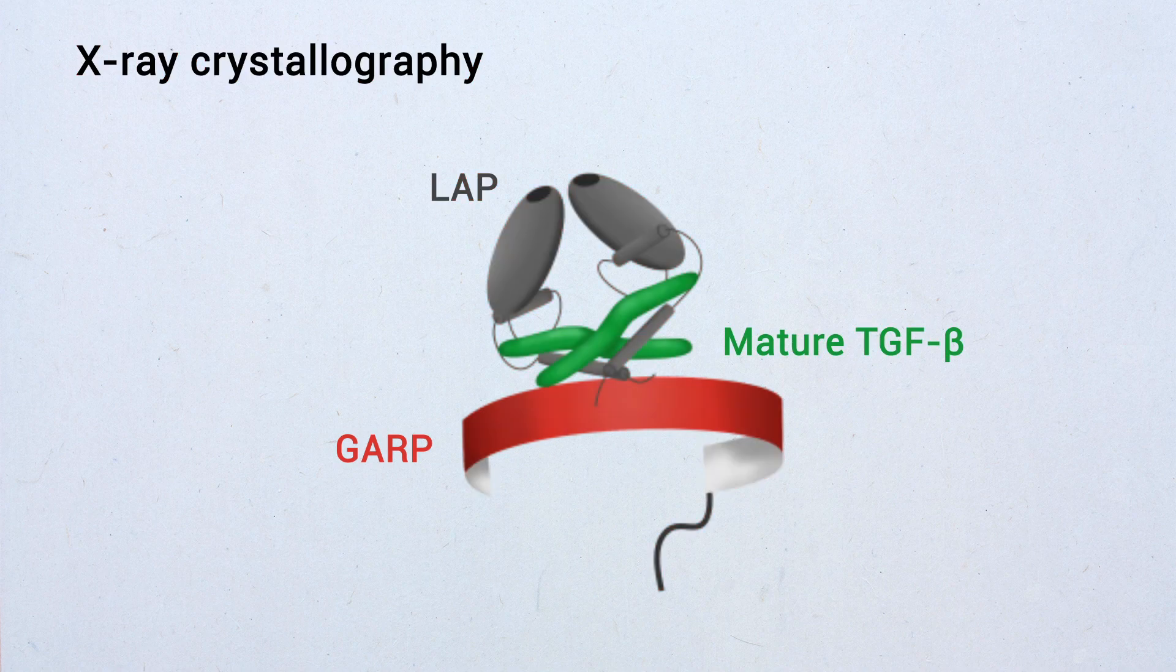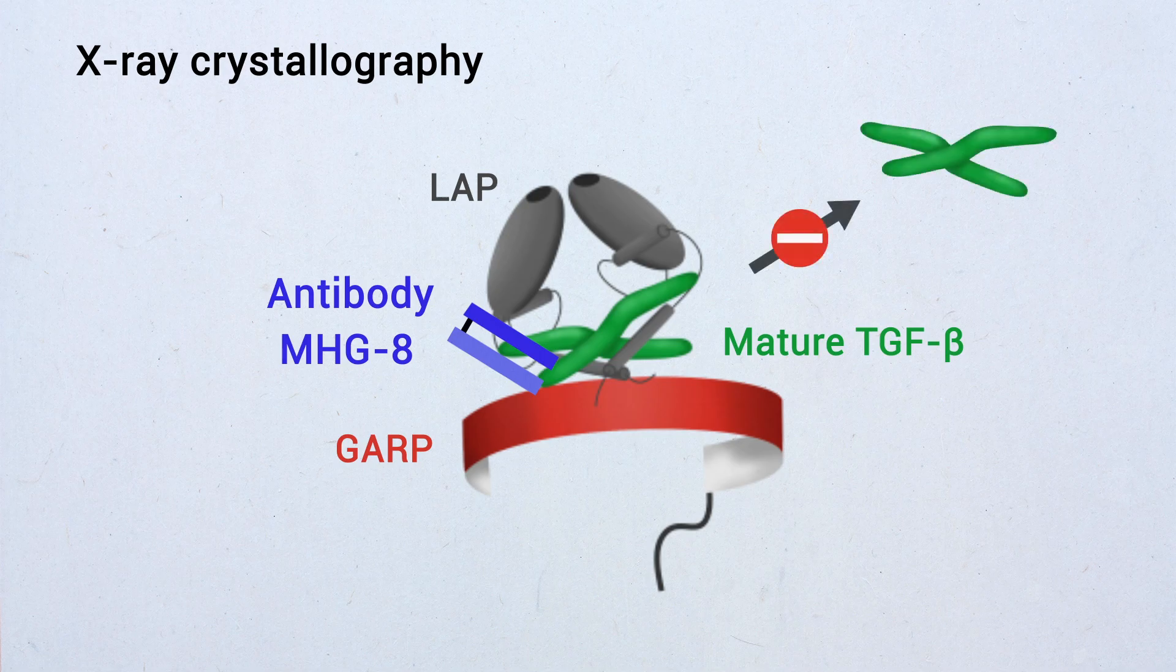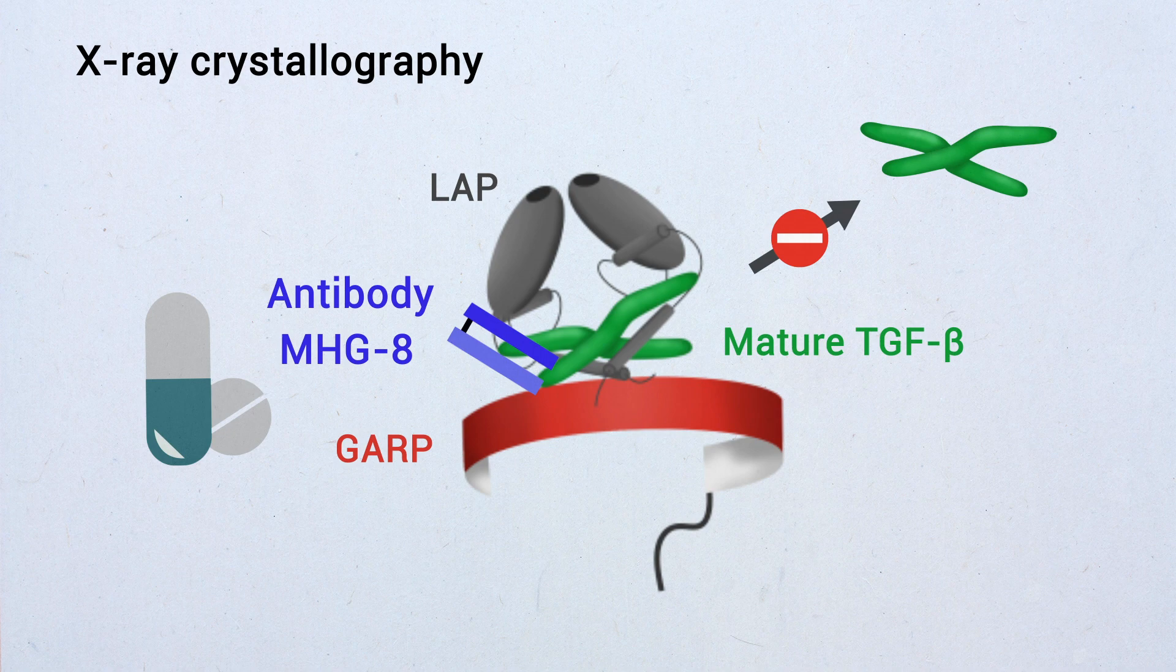As this complex proved recalcitrant to crystallization, we reasoned that assembly with an antibody might help. We used a fragment of antibody MHG-8 because we previously showed that it blocks TGF-beta activation and immunosuppression by Tregs, and could thus serve for cancer immunotherapy.